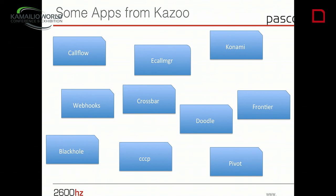Our Crossbar is our REST API where you can control all the system — create accounts, devices, users. Since it is multi-tenant, you can have accounts, resellers, resellers of resellers, whatever you want. Each user can have one or more devices attached. When you call a user, all the devices ring, or you can choose which one rings. Crossbar is an HTTP REST API which can control the entire system.